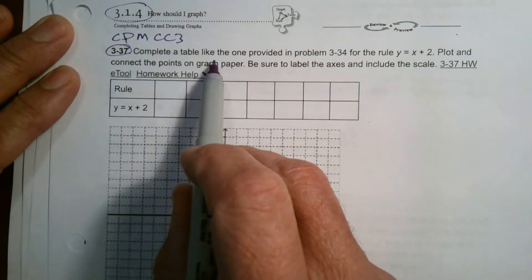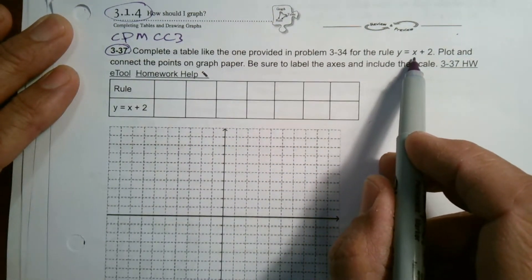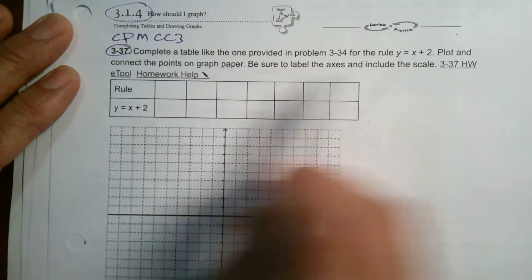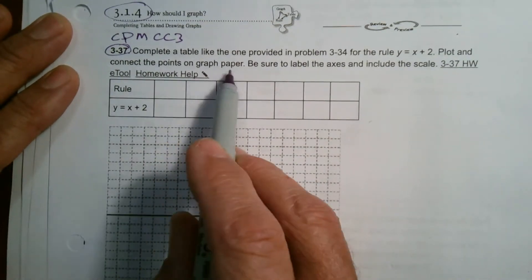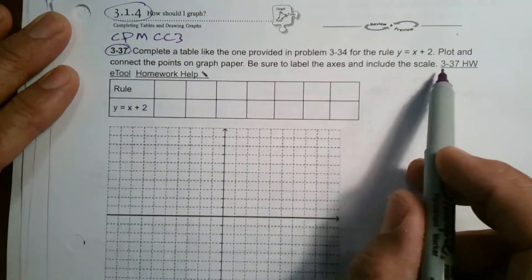It says complete a table like the one provided in problem 3-34 for the rule y equals x plus 2, and then plot and connect the points on graph paper. Be sure to label the axes and include the scale.